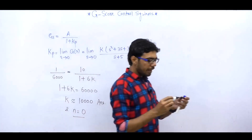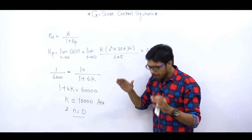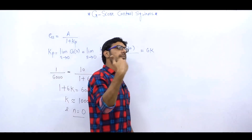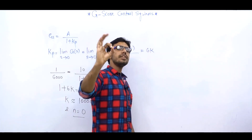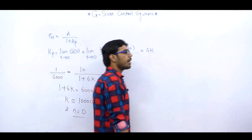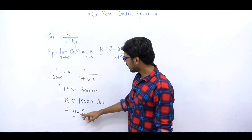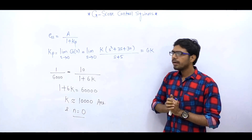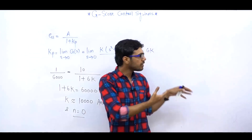तो K = 10,000 आया और N क्या है — 0। तो OPTION A correct होगा। OPTION B को गलती से correct मत कर देना। इस question में बहुत interesting चीज़ें समझी — अगर SYSTEM STEP FUNCTION के लिए FINITE NON-ZERO STEADY STATE ERROR generate कर रहा है तो 100% SYSTEM TYPE 0 होगा। वहाँ से N निकला, फिर STEADY STATE ERROR और INPUT use करके N और K की value find कर ली।